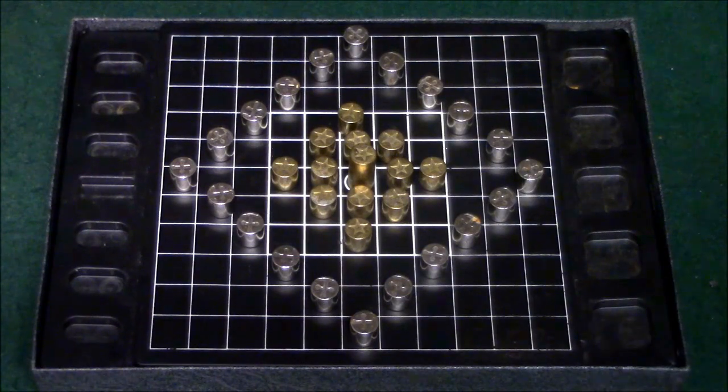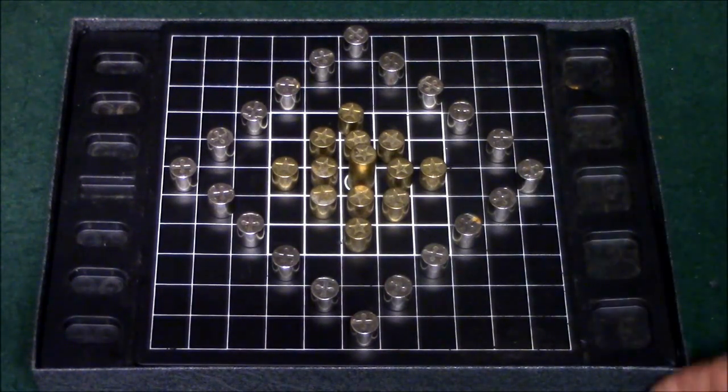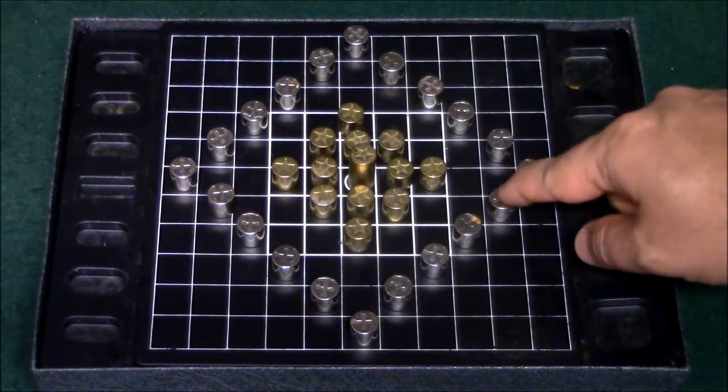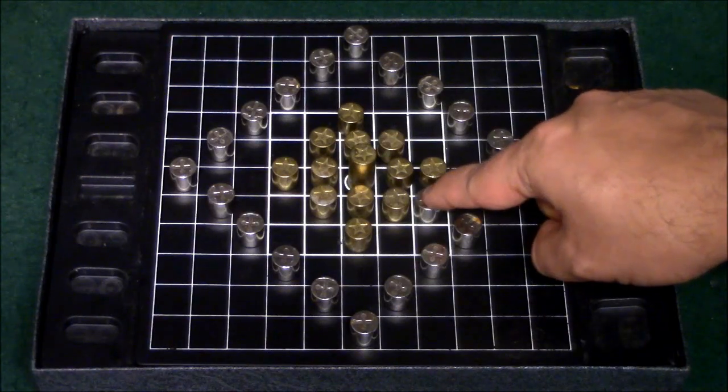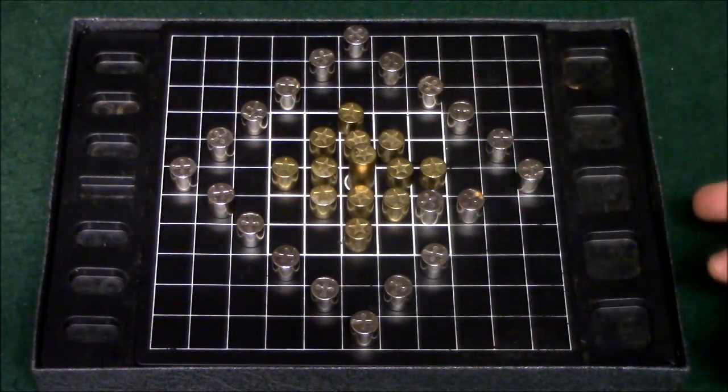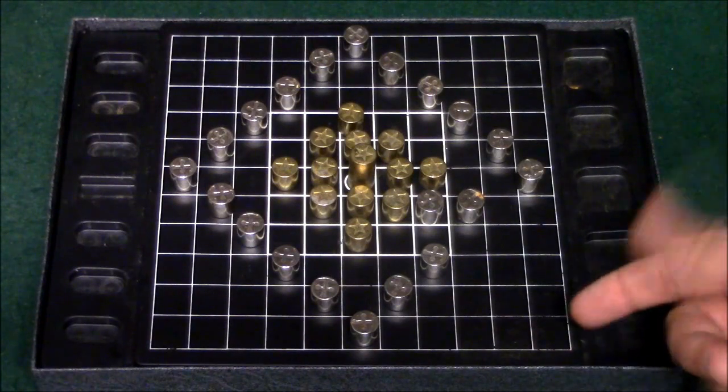So I'll go ahead and just show you kind of how a typical game will work here. Let's say it's silver's turn, silver starts, and silver decides he's going to move a piece over here. And let's say he decides he's going to move a piece over here.